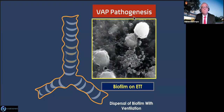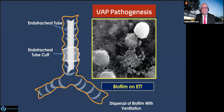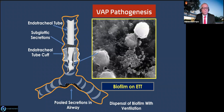Let's review the old VAP pathogenesis. Every time you have an endotracheal tube, you impose risks. The biofilm plays a significant role, which is why we have so many suction devices. The cuff is never perfectly tight against the mucosa, allowing subglottic secretions to trickle down — that's why we have subglottic secretion suctioning. Pooled secretions can be pushed down by the suction catheter or dispersed by mechanical ventilation. The dispersal of biofilm remains extremely important.